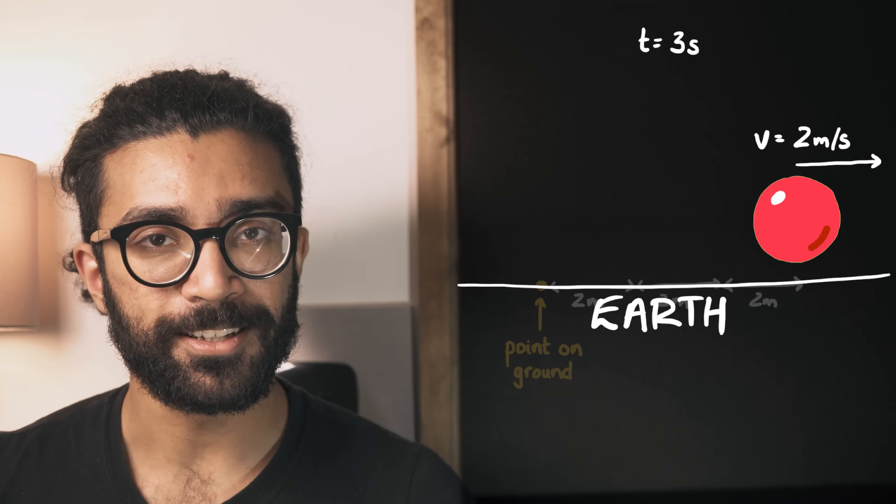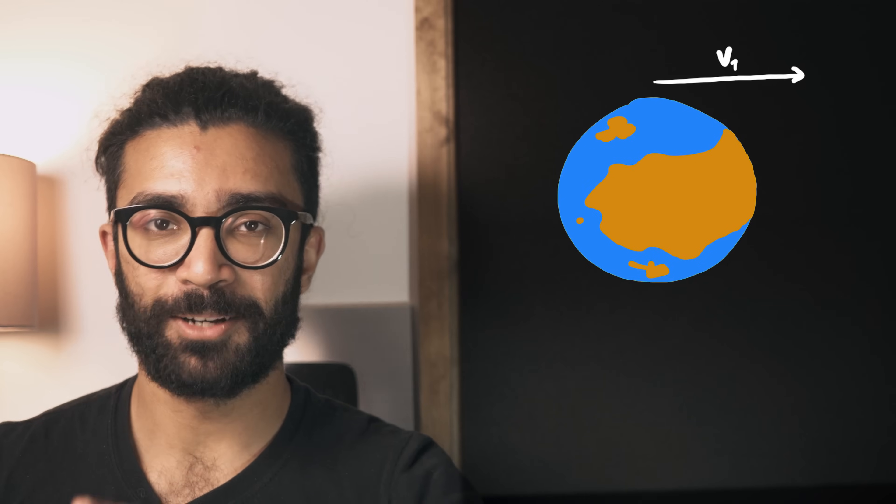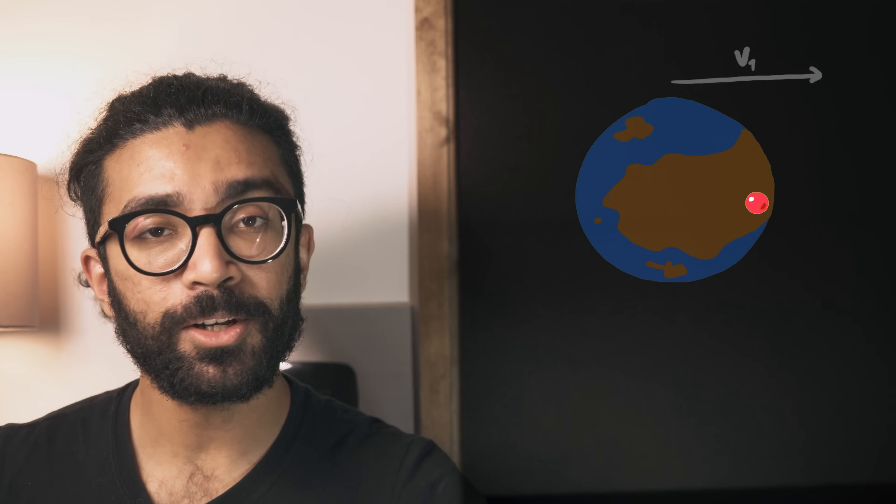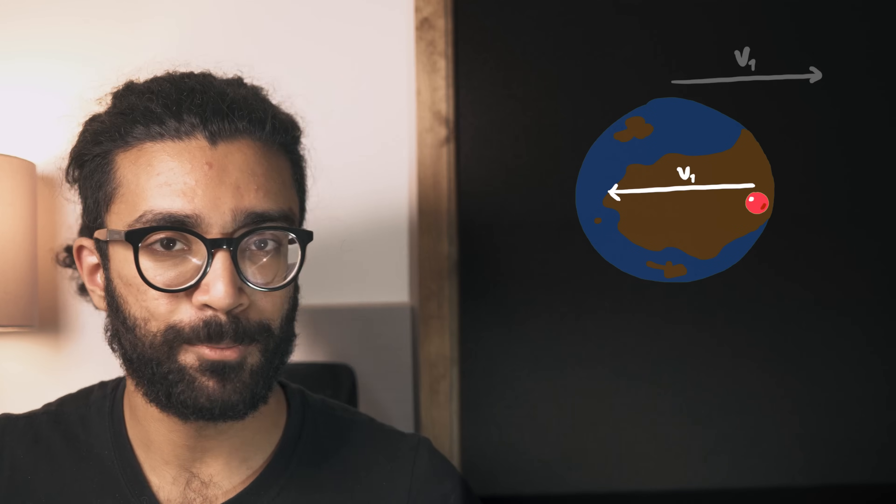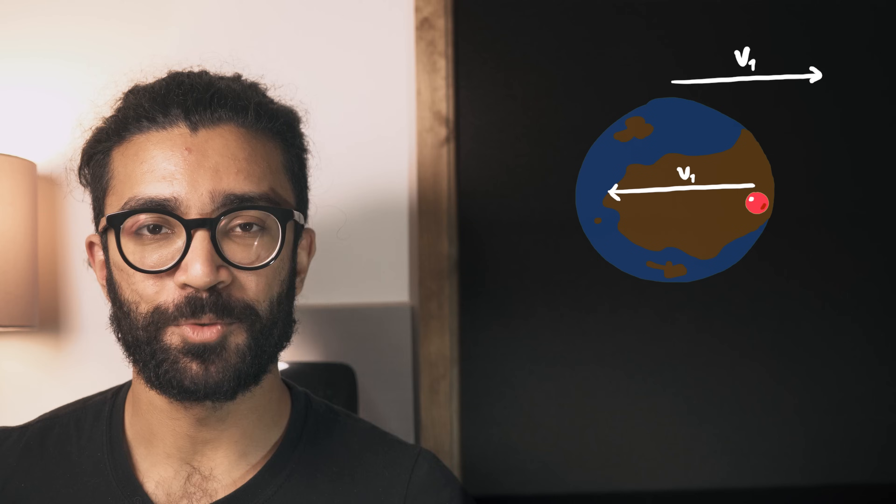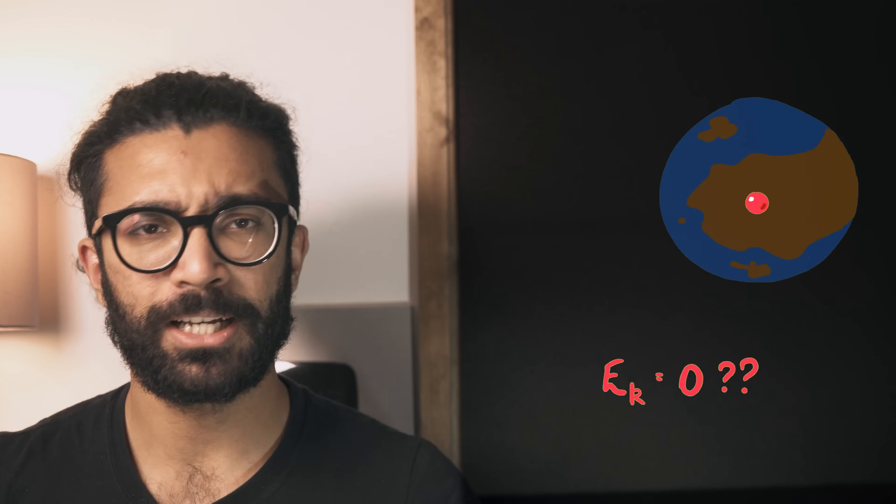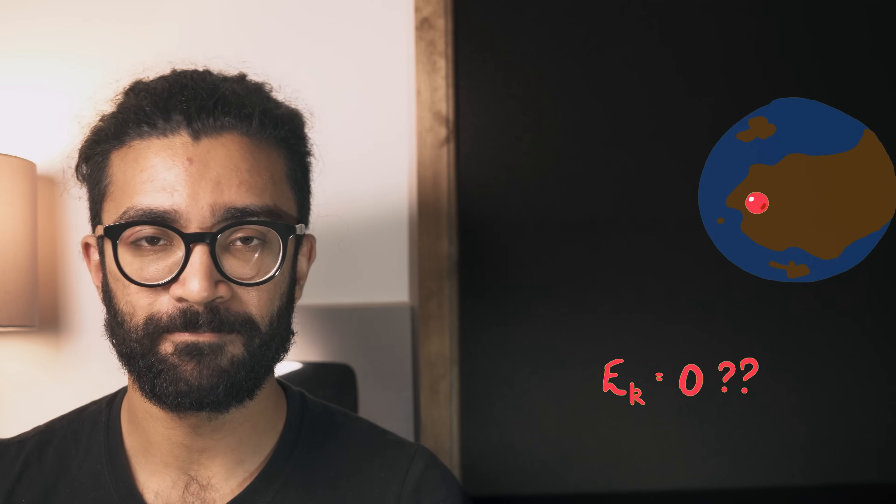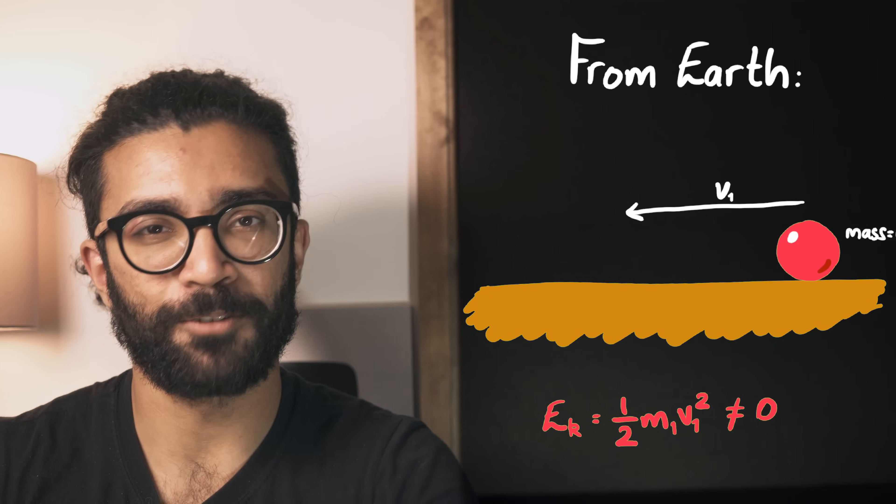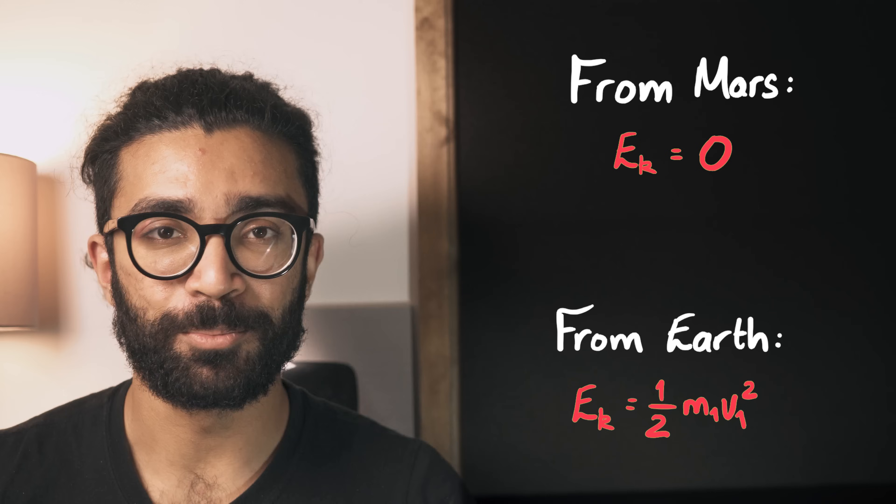But let's imagine we're now on a different planet, let's say Mars, and we see the Earth moving this way. Let's ignore the rotation of the Earth just to keep things super simple. I know this is a bit strange, but run with me here. Let's also imagine that we somehow spot the object that we're considering on Earth and it so happens to be moving at the same speed relative to Earth as the Earth seems to be moving relative to us. Except the object is moving in the opposite direction to the Earth. So to us, from Mars, it looks like the object is not moving at all. So from Mars we would say, well the object has no kinetic energy at all because to us it's not moving. Whereas our friends on Earth would say, what nonsense, of course the object is moving along the ground so it has kinetic energy.